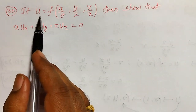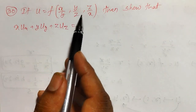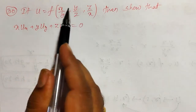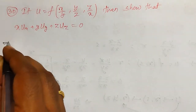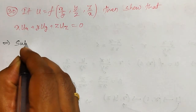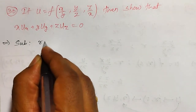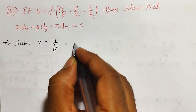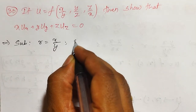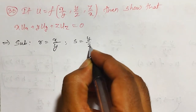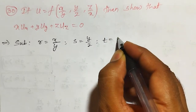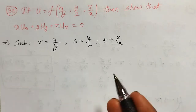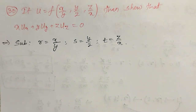Here U is a function of x, y, z and x, y, z are themselves functions of some other variables. Let me convert this into a composite function type by substituting r equal to x/y, s equal to y/z, and t equal to z/x in the given function. Then it will convert into a composite function type.